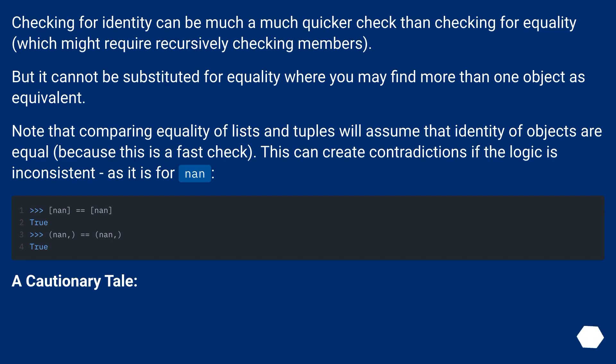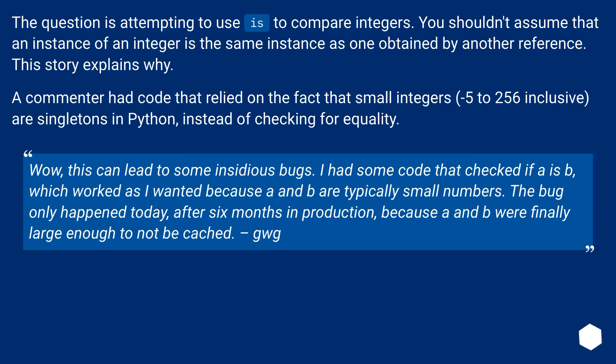A cautionary tale. The question is attempting to use is to compare integers. You shouldn't assume that an instance of an integer is the same instance as one obtained by another reference. This story explains why. A commenter had code that relied on the fact that small integers, -5 to 256 inclusive, are singletons in Python, instead of checking for equality.